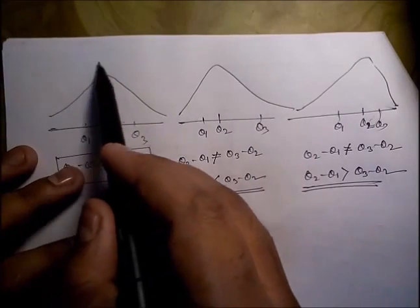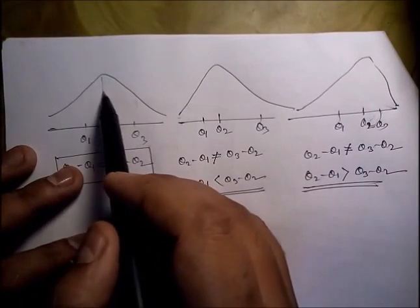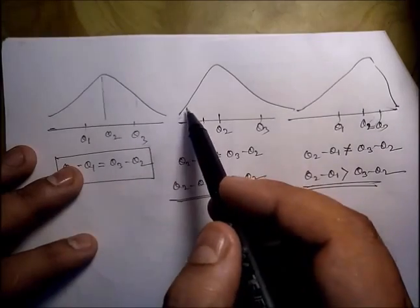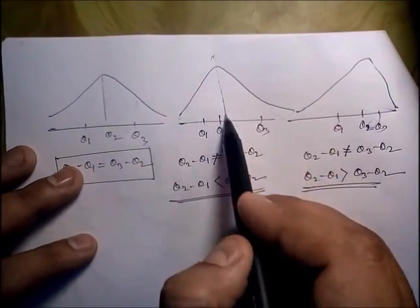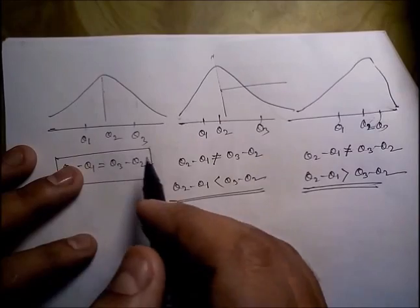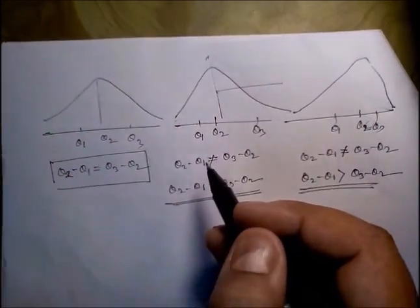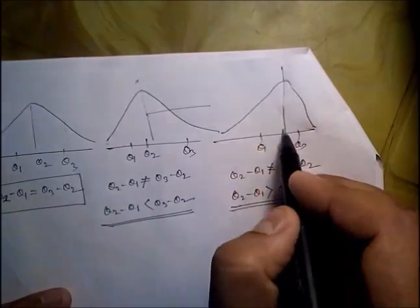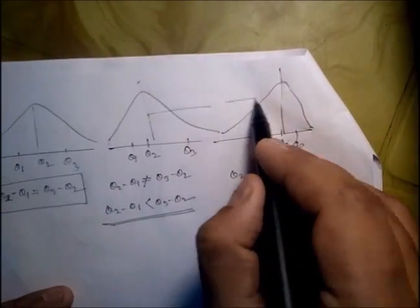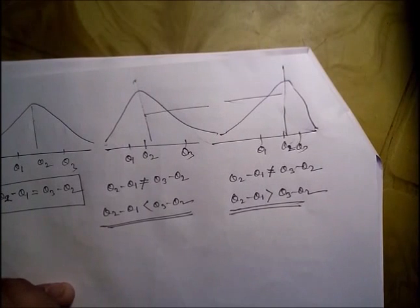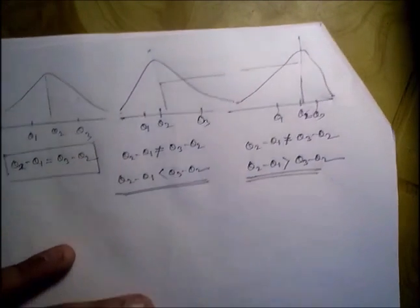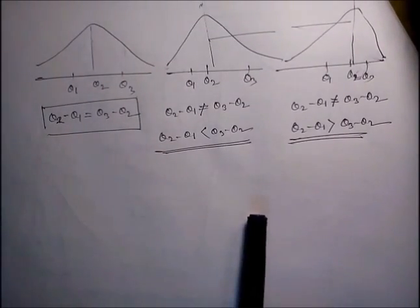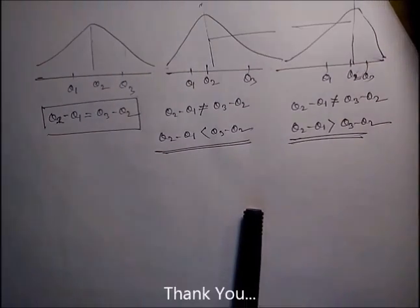So, if the distribution looks symmetric we say it is a symmetric distribution; if there is a long right tail, it is right-skewed or positively skewed. That is the end of this particular lecture. Thank you very much.